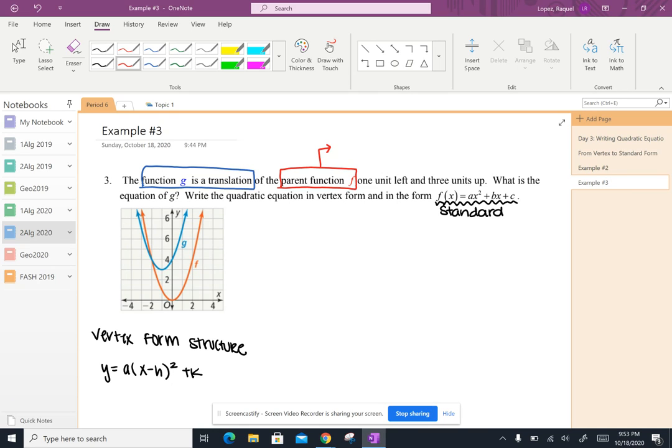So the parent function of a parabola has the equation, and we're going to call this f(x) because they told us that the parent function here is going to be called f. So f(x) equals x squared.